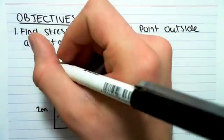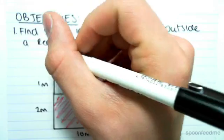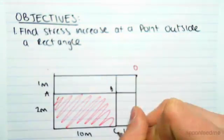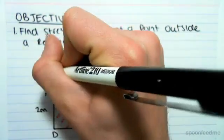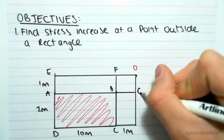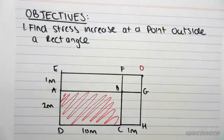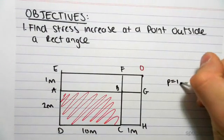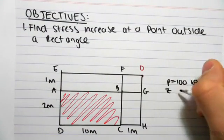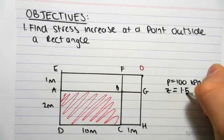Let's just make up names for this. Let's call this A, B, C, D, E, F, G, H. Okay? Let's say also that the pressure was 100 kPa, and that the depth we're at is 1.5 meters.